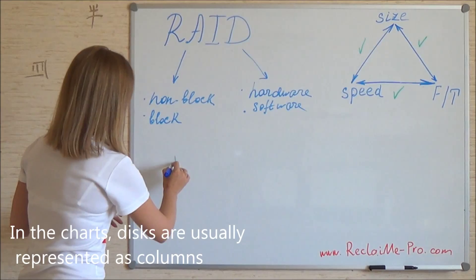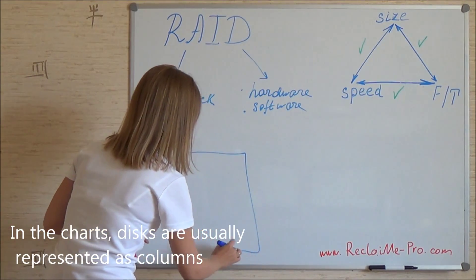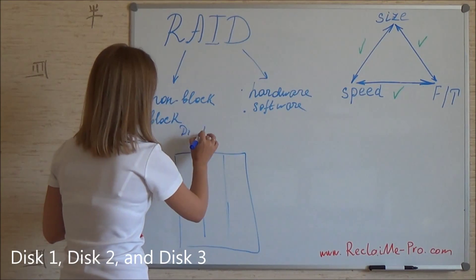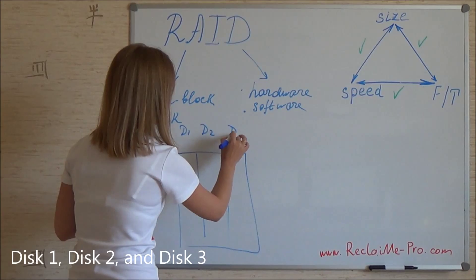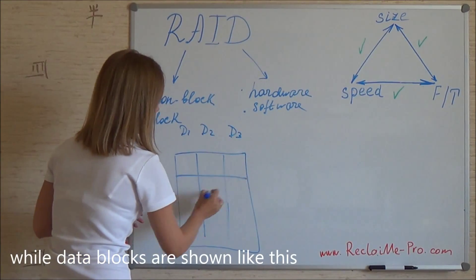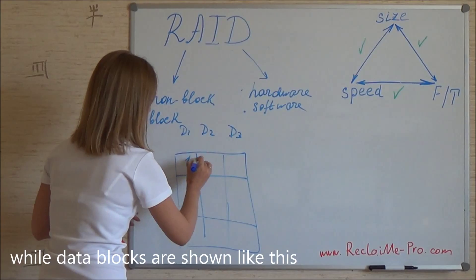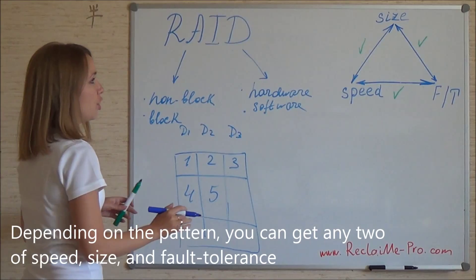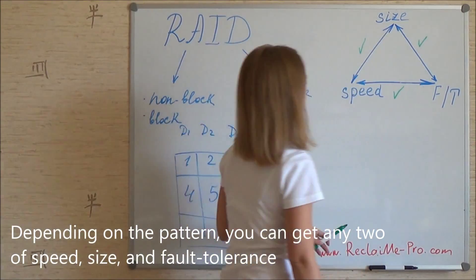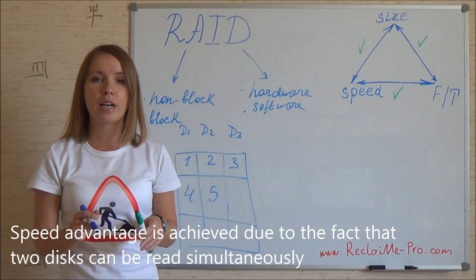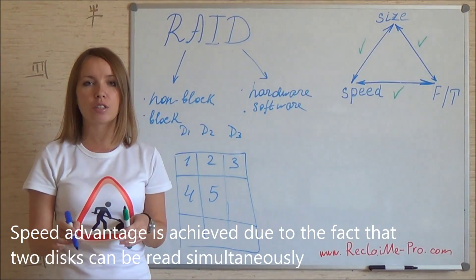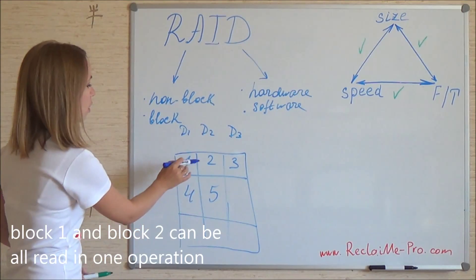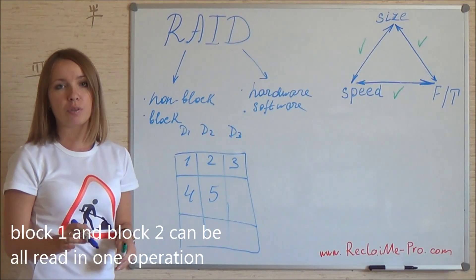In charts, disks are usually represented as columns — Disk 1, Disk 2, and Disk 3 — while data blocks are shown alongside them. Depending on the pattern, you can get any two of speed, size, and fault tolerance. Speed advantage is achieved due to the fact that two disks can be read simultaneously. For example, block 1 and block 2 can be read in one operation.